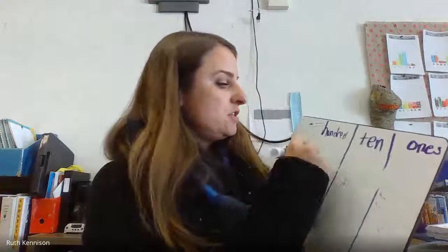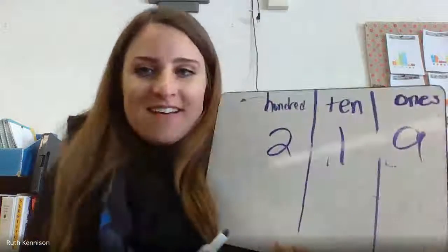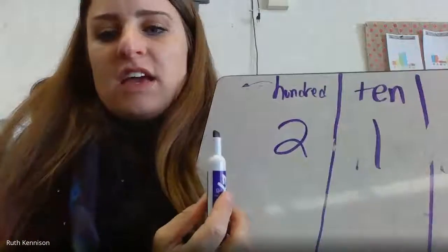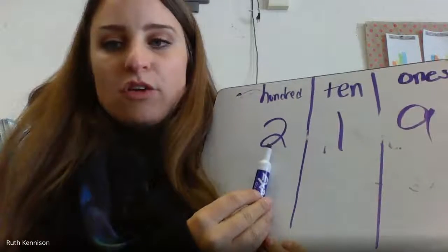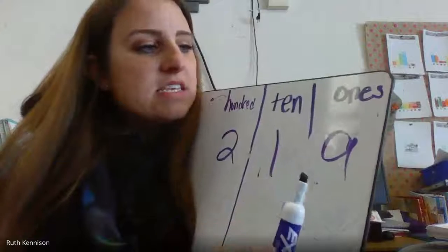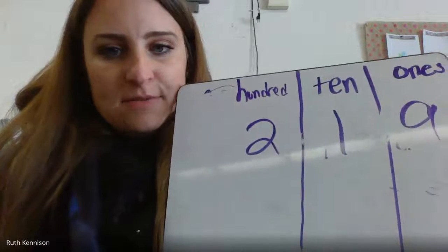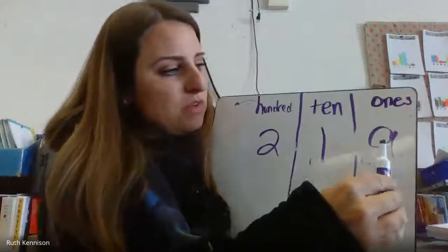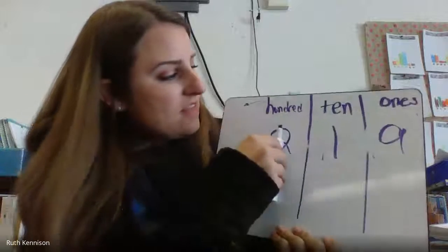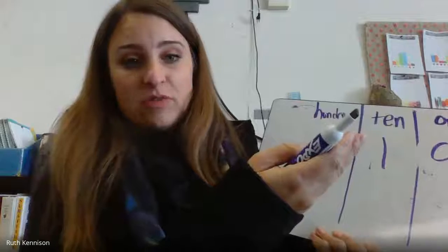If I were to write two hundred and nineteen — I have two in the hundreds place, I have one in the tens, and I have nine in the ones place. And those places always stay the same. One is always going to be on the right, and then tens, and then hundreds, and then one over would be thousands.